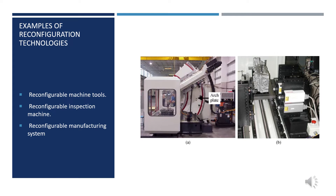A typical RMS integrates CNC machines and has several RMTs that are utilized to manufacture a family of products, as well as a quality inspection machine that inspects the product during its manufacturing. The structure of an RMS is easily changeable to enable adding more production resources.